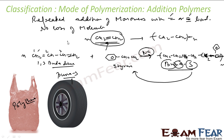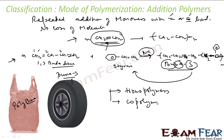Now if you see these two reactions: in this reaction I have only one kind of monomer, and in this kind of reaction I have two kinds of monomers. Thus addition polymerization reactions can also be classified into two types. One is homopolymers, where the monomers are the same. And co-polymers, which are formed by addition polymerization of two different monomers - Buna-S is an example of a co-polymer.